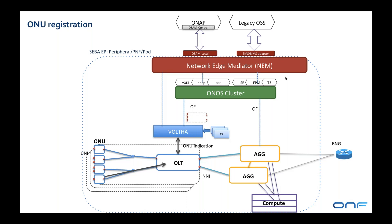Volta then sends an indication to ONOS by adding a port to the logical OpenFlow switch. ONOS sees this as an OpenFlow port-added event and knows there's a new UNI port — a new subscriber it can provision. ONOS then sends an event up to the NEM layer via the Kafka bus saying a new UNI was added, and at this point NEM has the opportunity to validate whether this is a valid ONU to be allowed on the network.